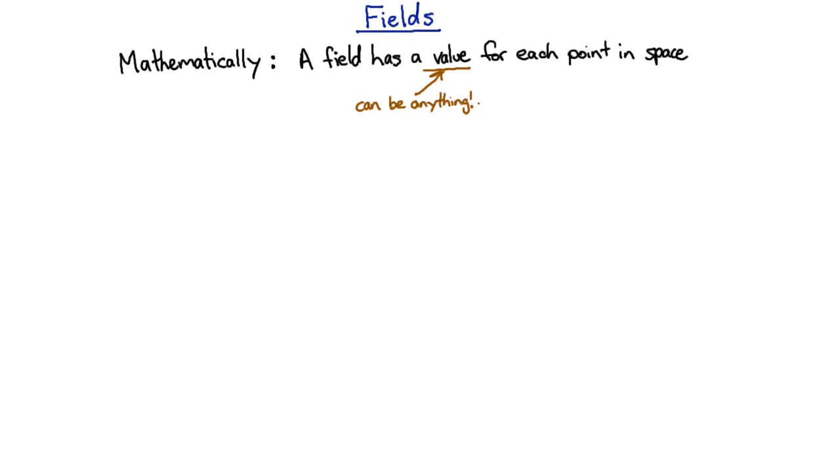Let's take a quick aside and discuss fields. Now mathematically, a field is just something that has a value for each point of space. What kind of value? That's a kind of generic thing. Well, the answer is any kind of value. It can even have units, and different kinds of values for each point in space will define different kinds of fields, and you've met heaps of these.